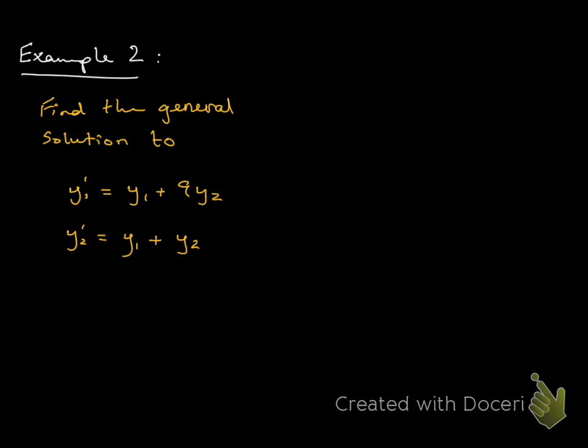Let's find the general solution. Notice I don't have any initial conditions here. I'm just looking for the general solution to this system: y₁' = y₁ + 9y₂ and y₂' = y₁ + y₂. What I want to do is create that vector y' = Ay. I do that by identifying the coefficients. My matrix A should be 1, 9, 1, and 1.